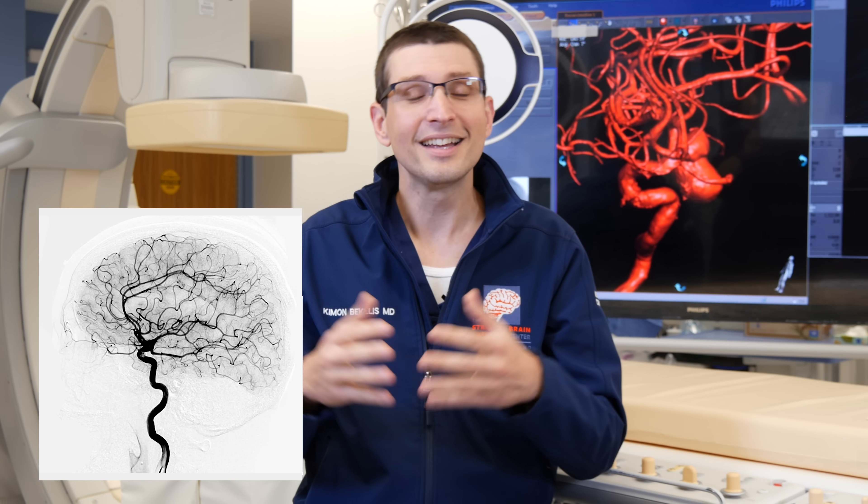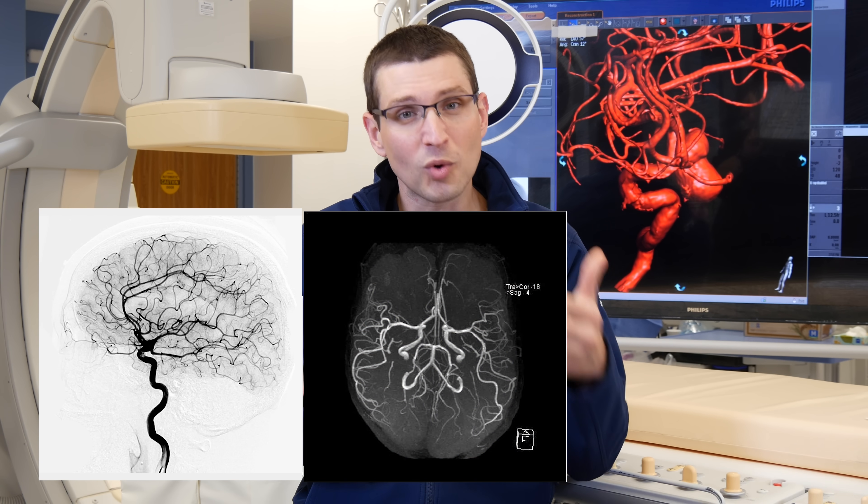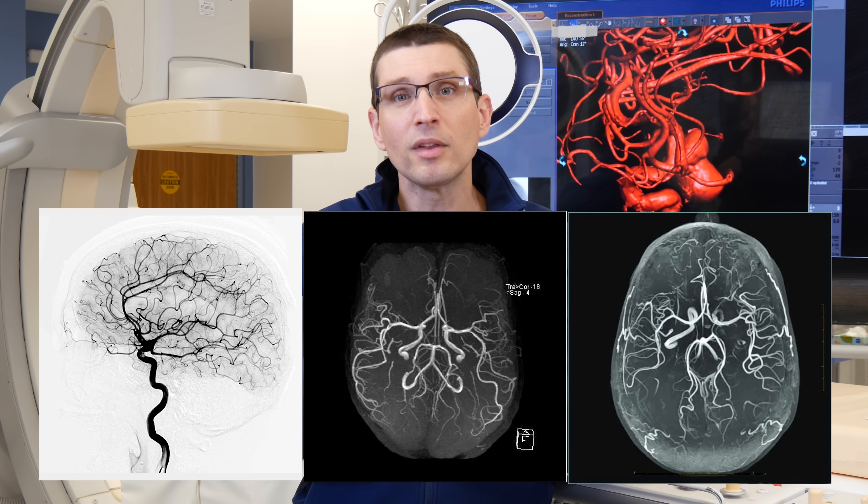Angiography is the gold standard when it comes to blood vessel imaging as compared to a CTA or an MRA. The downside of angiography is that it's more invasive; however, in this day and age, it's an extremely safe process. Angiography is very specific to the blood vessels — it doesn't give you any information on the brain itself. So in cases where you need angiography to look at the blood vessels but also need to look at the brain, you have to supplement with a Head CT or a brain MRI.